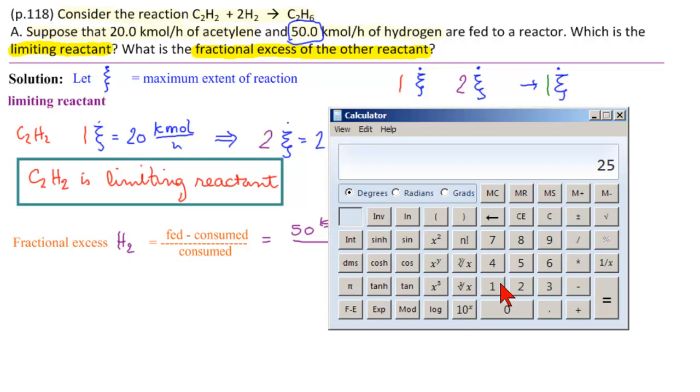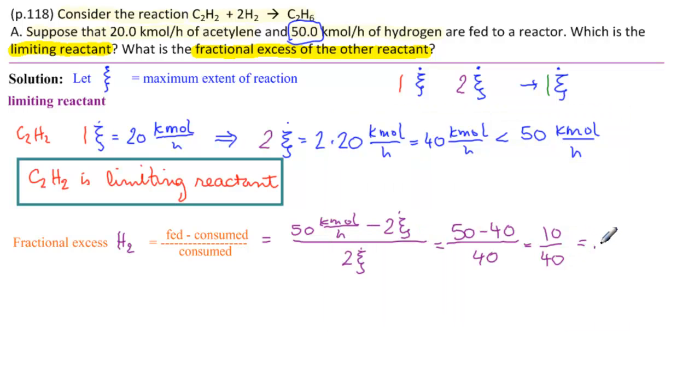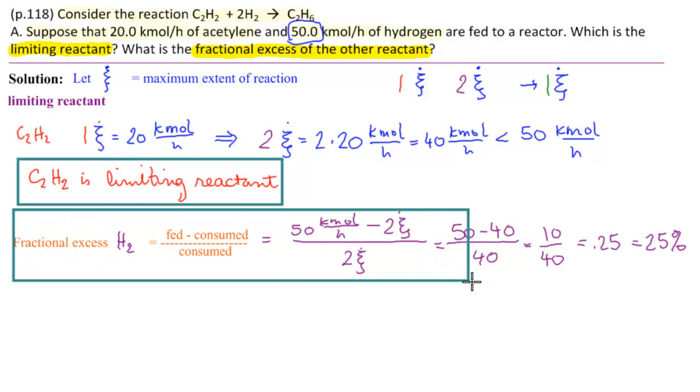Get our calculator out here. 10 divided by 40 is 0.25, and if we wanted to know, that would be 25%. So the fractional excess of H2 is 0.25.